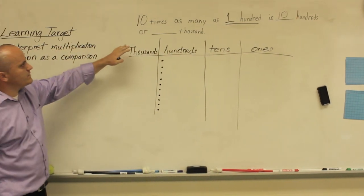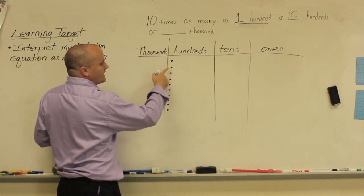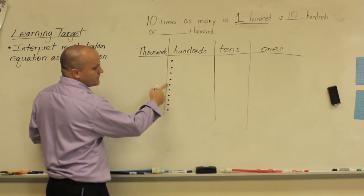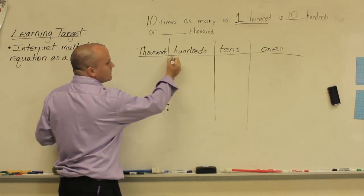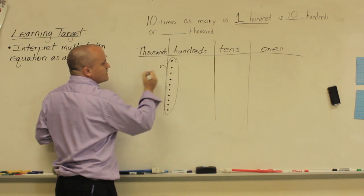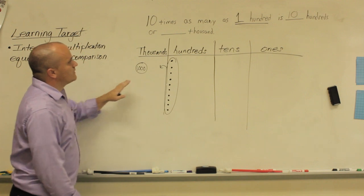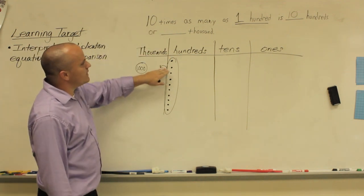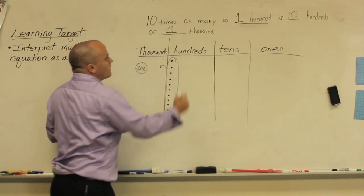Now we need to figure out how many thousands ten hundreds makes. If I count my hundreds — one hundred, two hundred, three hundred, four hundred, five hundred, six hundred, seven hundred, eight hundred, nine hundred, ten hundreds — I know that ten hundreds is the same as one thousand. So ten times as many as one hundred is ten hundreds, or one thousand.